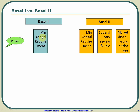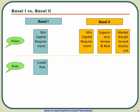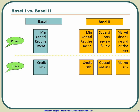So in simple words, Basel 1 has only one pillar whereas Basel 2 has three pillars. If you think of risk also, Basel 1 talked of just credit risk, whereas Basel 2 talks of credit risk, operational risk, as well as market risk. Essentially, risk-wise, Basel 1 was only bothered about one particular risk whereas Basel 2 is bothered about three risks.